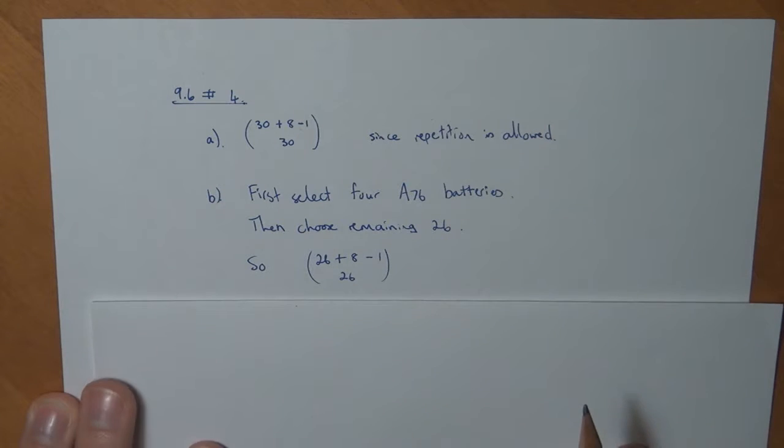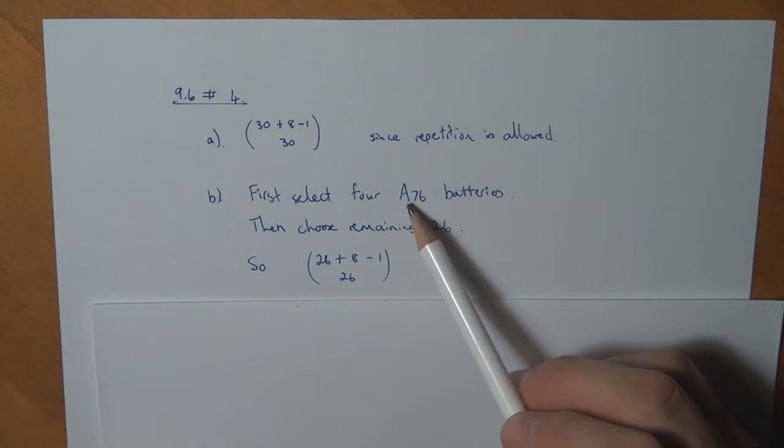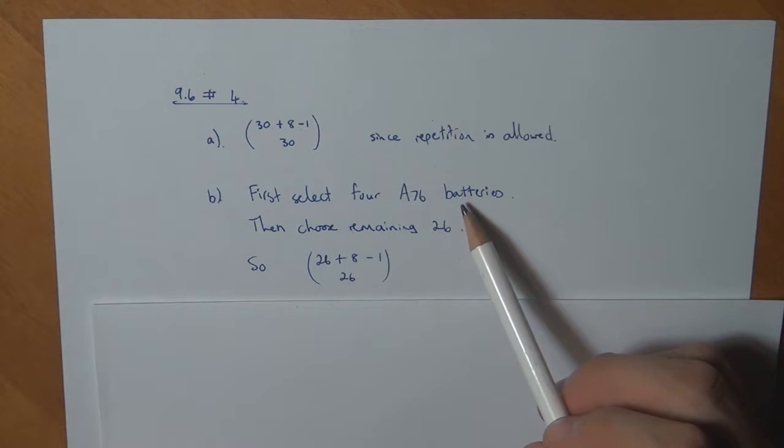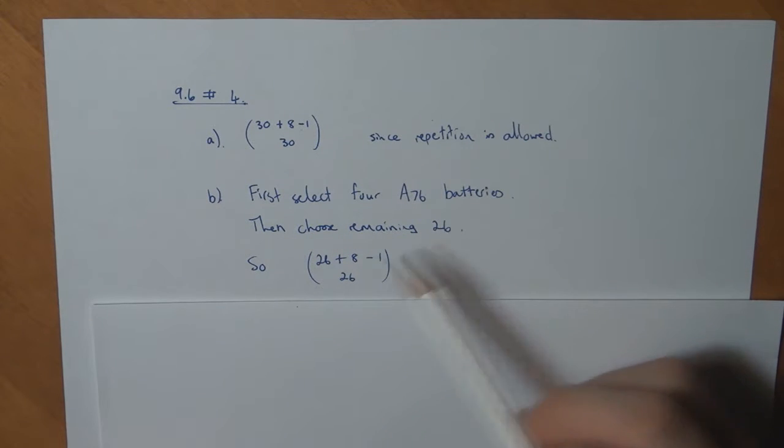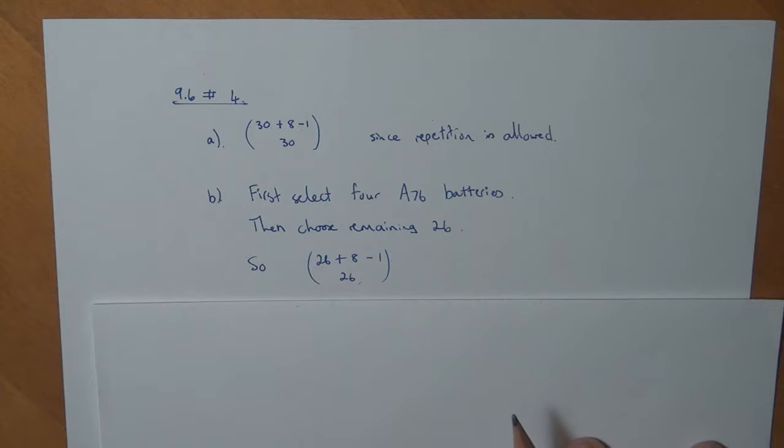In Part B, I could first select four A76 batteries, then choose the remaining 26, which would be 26 plus 8 minus 1 choose 26, because repetition is allowed.